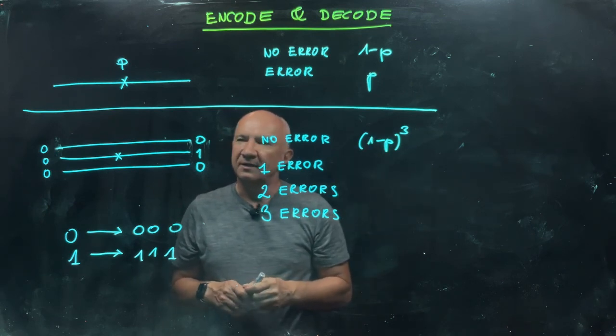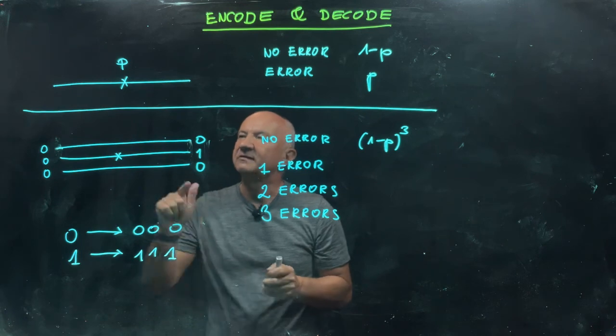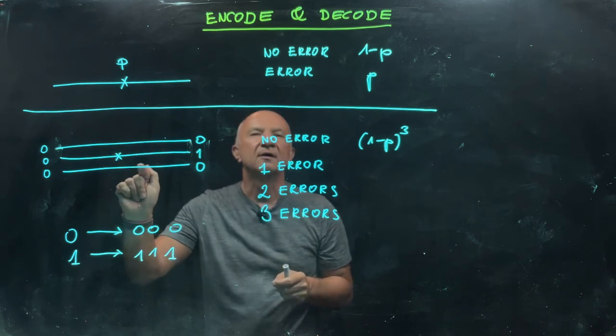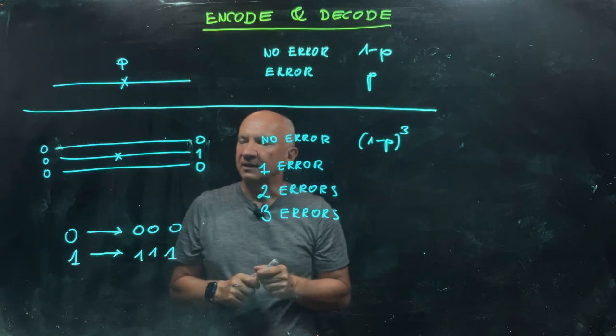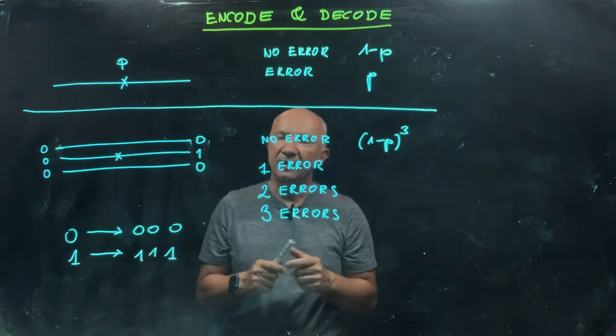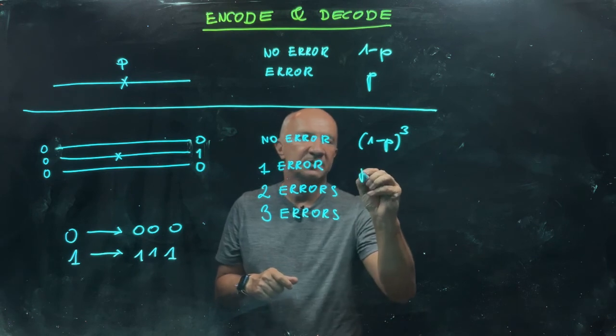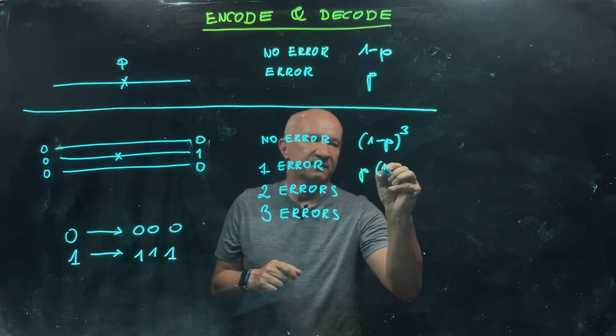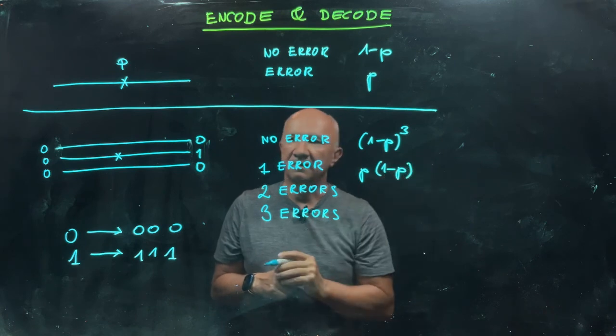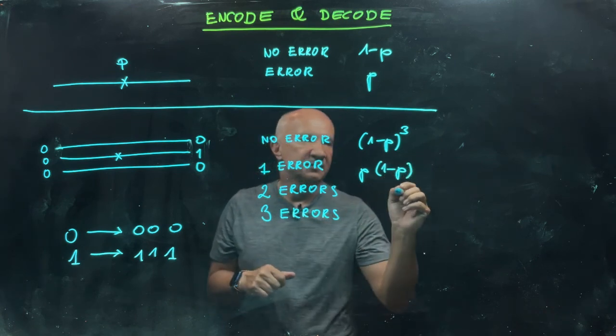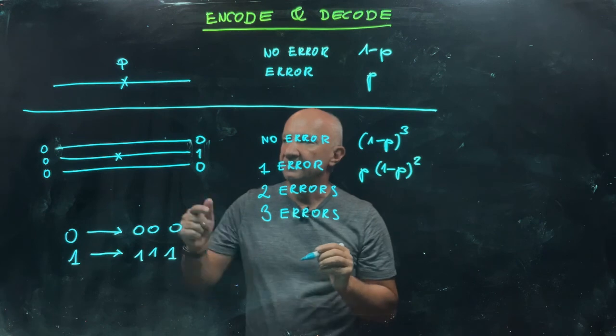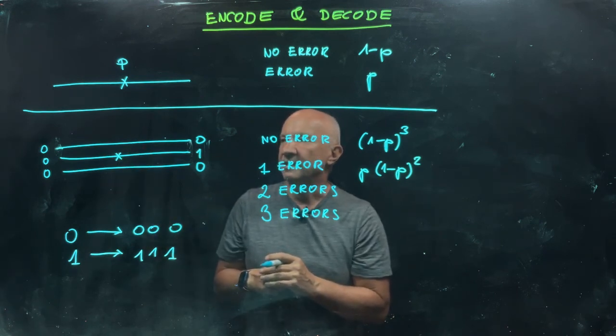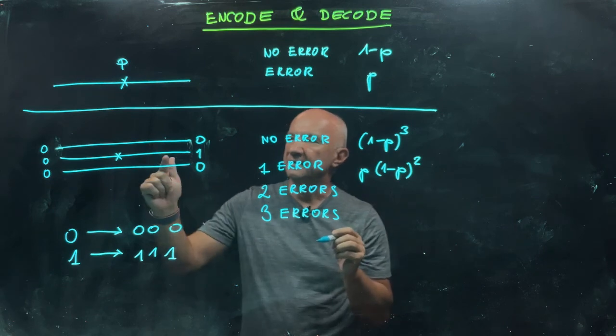One error can happen in three different ways: on the first bit, on the second bit, or on the third bit. When one error happens, it happens with probability p, but two other bits are not affected, so they go through with probability (1-p)². There are three possible ways that one error can happen, so let's multiply it by three.